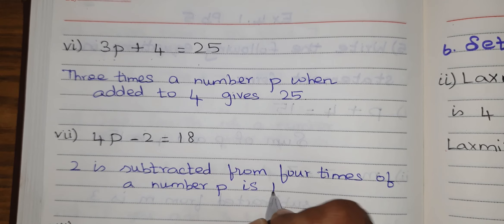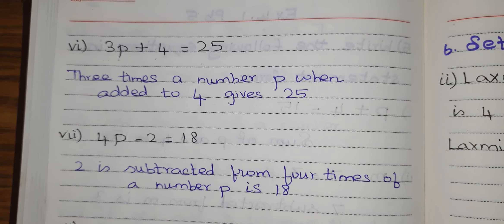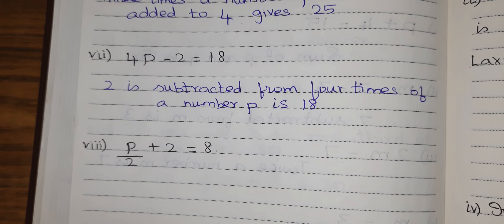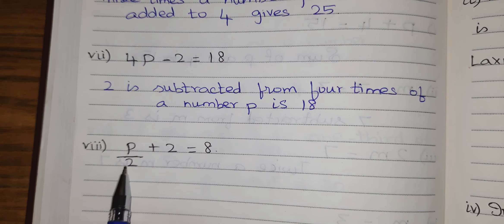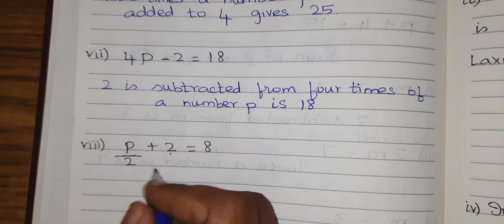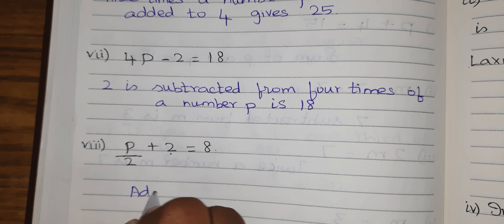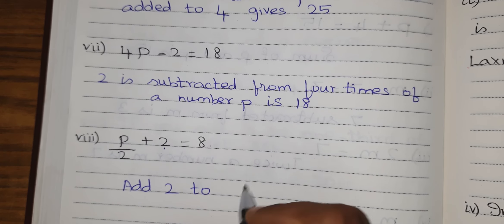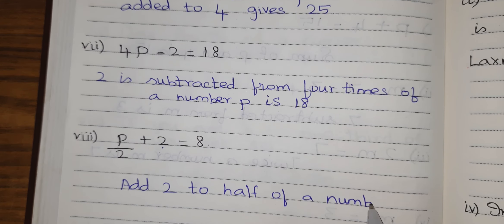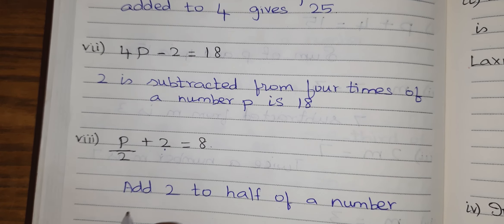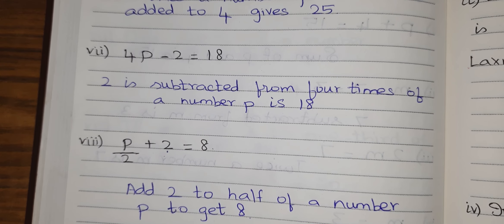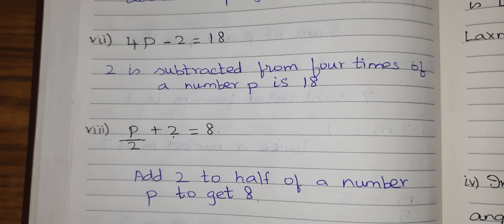For the next equation: half of a number p added to 7 equals 8. Thank you.